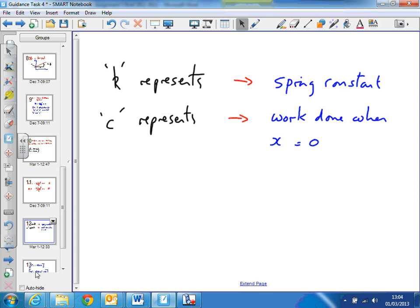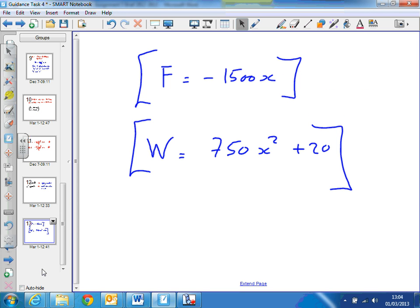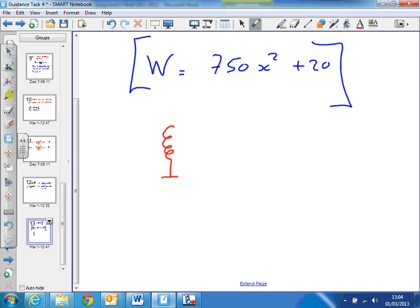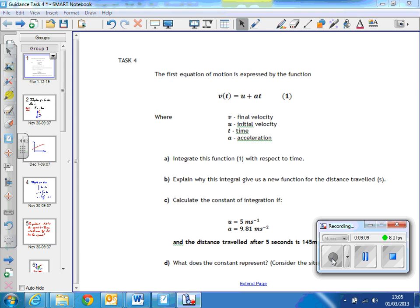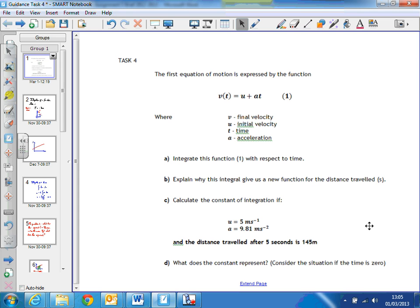So we've now got two formulae to represent this situation that we had right at the start. Here they are. So for a spring, some sort of spring with a mass on the end, we've got the familiar Hooke's law, which represents the force on the spring, and in this case k is minus 1500. But we've also now got a new formula that allows us to find the work done moving this spring from one position to another position, distance x.